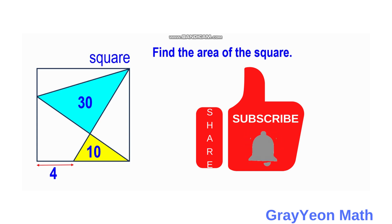Welcome to Gradient Math. We are asked to solve this problem. We have a square with two triangles inside having areas of 30 square units and 10 square units. The yellow triangle below has an offset of 4 units from the left side of the square, and we need to find the area of the square.